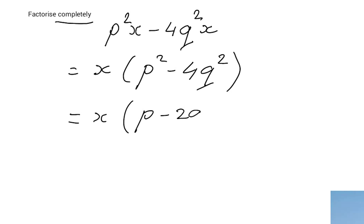So p minus 2q, p plus 2q. Or if you like, p plus 2q, and then p minus 2q. The order doesn't really matter. Now I have factorized it completely.